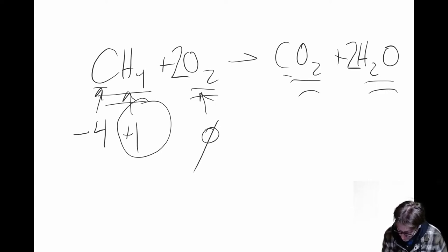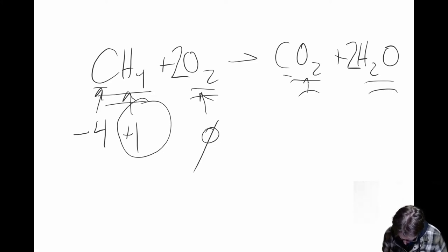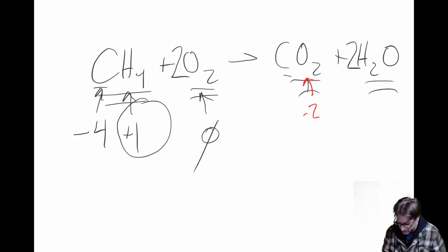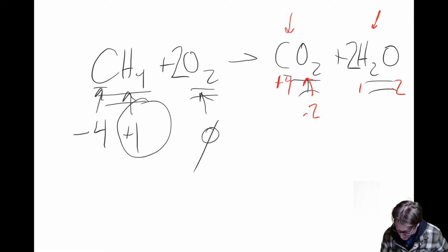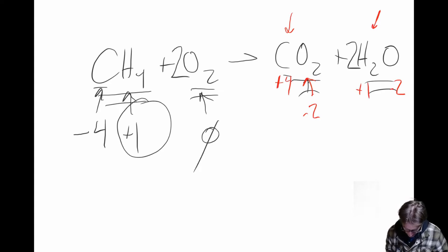Now on the product side, carbon in CO₂ is attached to two oxygens. That oxygen is no longer by itself — it's combined, so it has an oxidation number of minus two. That forces carbon to now be a plus four. Hydrogen in H₂O is still a plus one.